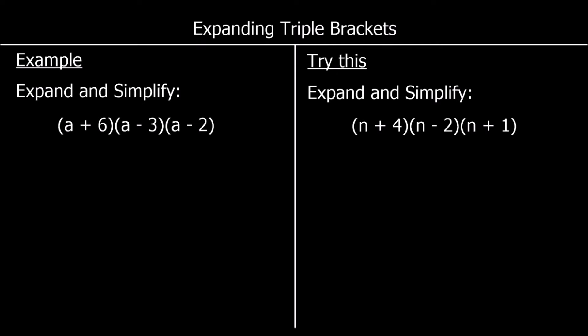In this question, we are being asked to expand and simplify triple brackets. We've got (a + 6)(a - 3)(a - 2). To expand and simplify triple brackets, we initially expand and simplify two of them, and then expand and simplify again with the third bracket.